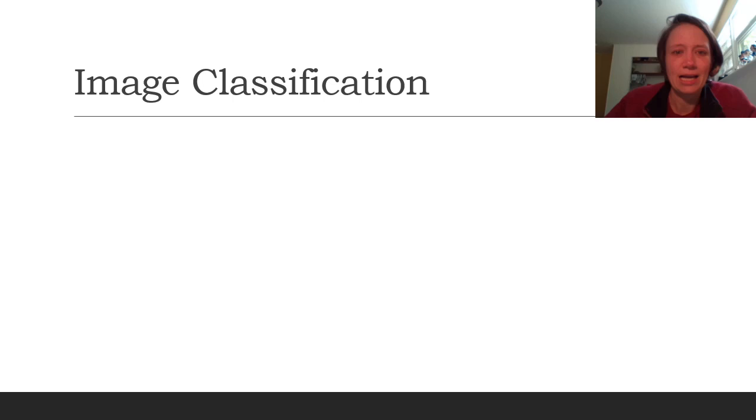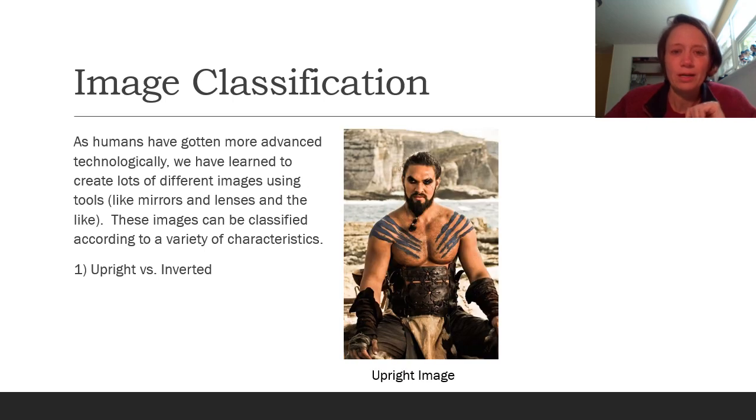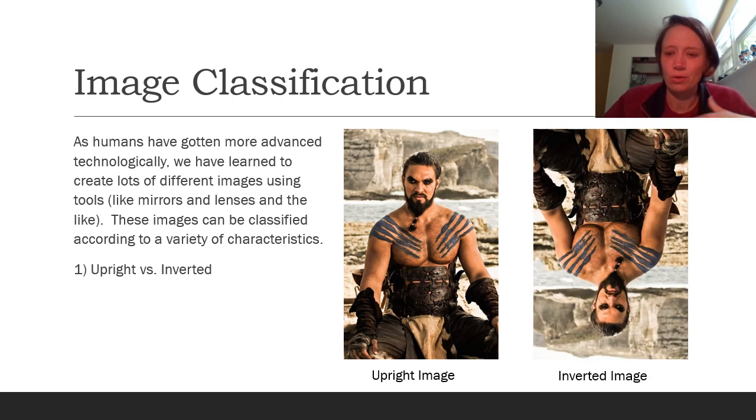All images can be classified or categorized in a few different ways. The first way we classify images is whether they are what's called upright versus inverted. So if we've got any Game of Thrones fans out there, this is an upright image of Khal Drogo because he looks like a human. We are used to humans looking with the head on the top and the feet on the bottom. And of course an inverted image, he would be flipped upside down. So that is the first way we can classify images, upright versus inverted.